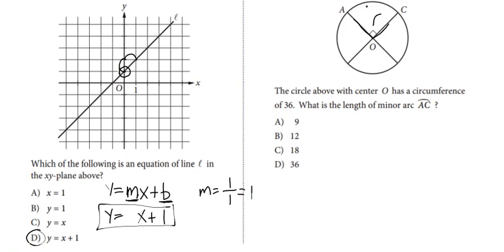So all we have to do is get the entire circumference and then divide it by four because that's the portion of the circle that we're looking for. 36 divided by four is nine, so that'll be answer choice A.